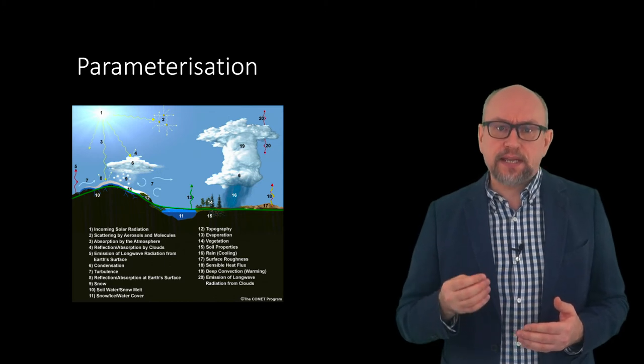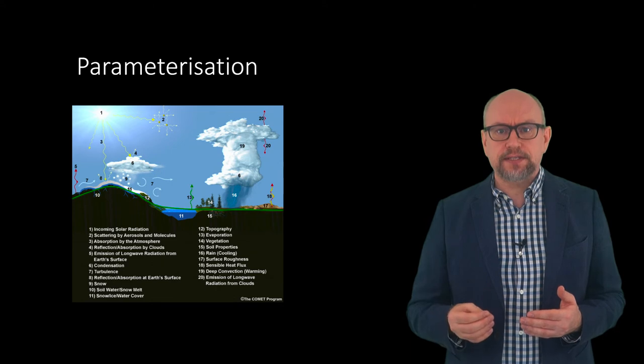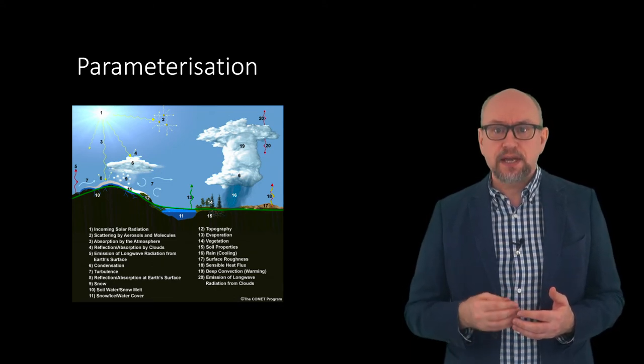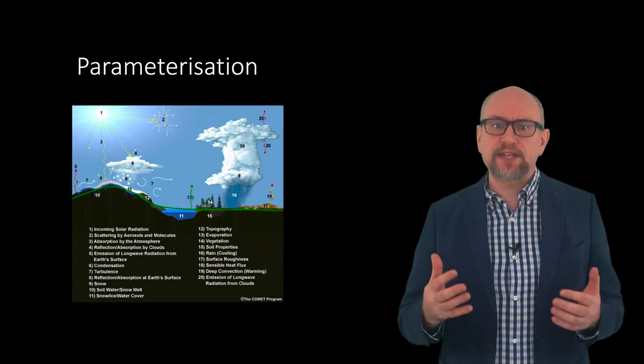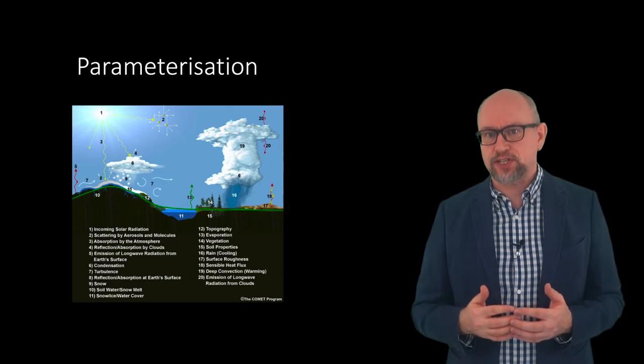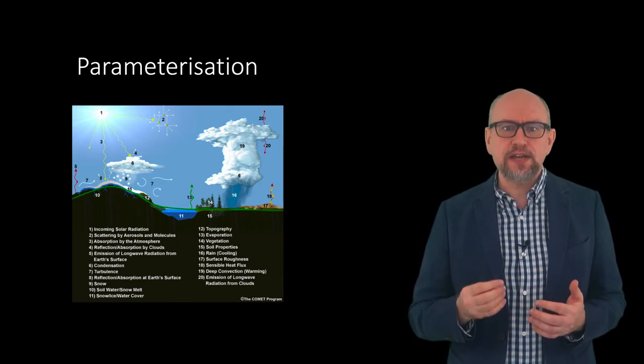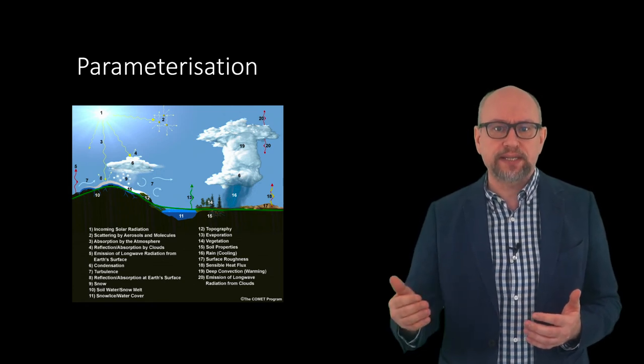This means that the climate models in the IPCC reports give different answers even if they are initialised with the same climate state. The variance in the global average temperature from these different models gives us a sense of the uncertainty in the model calculations. This is why it is important not to rely on any one climate model or to describe any one model as being the best.